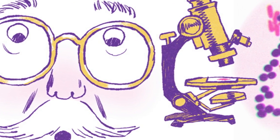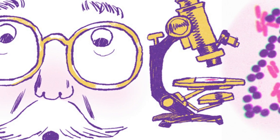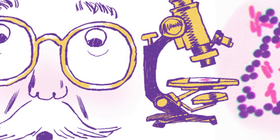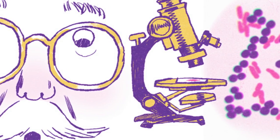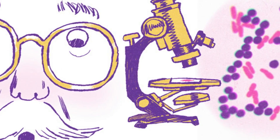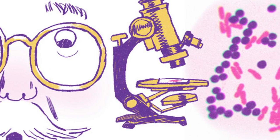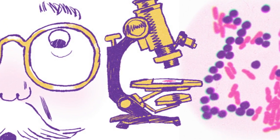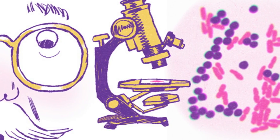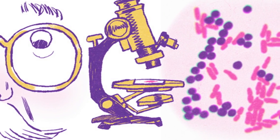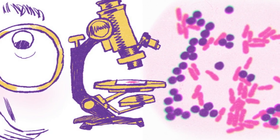He noticed that treating a smear of bacteria with a crystal violet stain, followed by an iodine solution and an organic solvent, revealed differences in the stature and biochemical function of various samples.